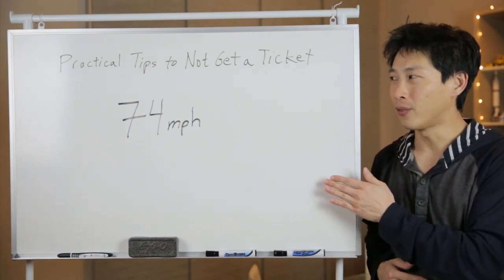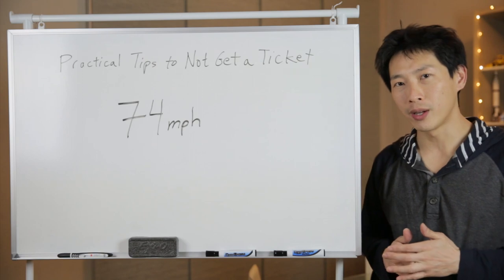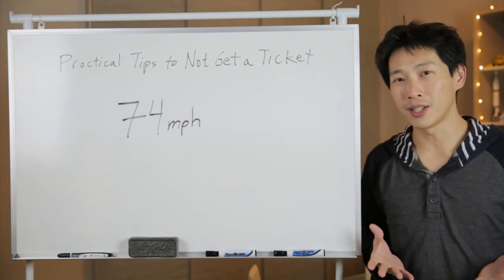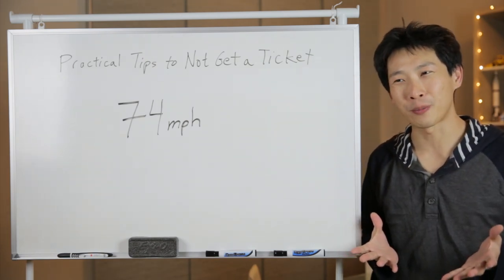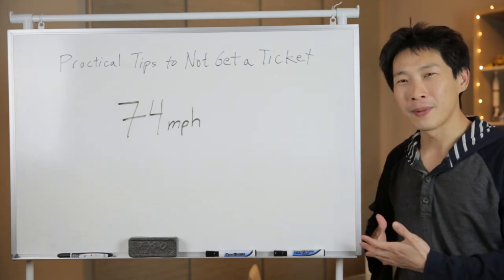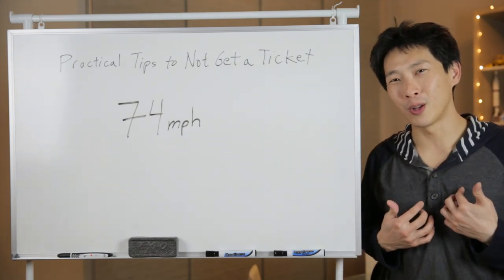So generally, I see 74 miles an hour work really well and I have never gotten a ticket at 74 miles an hour surprisingly. I have gotten speeding tickets so my methods here, sometimes I don't even follow it.